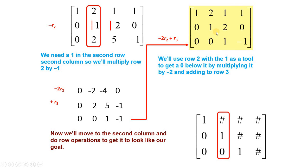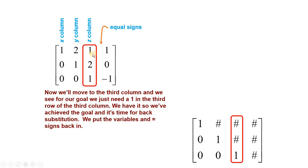اب یہ والی matrix اور یہ والی matrix ایک جیسی ہو گئی ہے — this matrix is just like the goal matrix. یہاں پہ کام کرنا تھا اور اگلا target اس جیسا column بنانا تھا، لیکن یہ already اس جیسا ہے۔ تو ہمارے پاس یہ جو matrix ہے — it is the row echelon form of the augmented matrix. This first column is the coefficient of x, the second column the coefficient of y, and the third the coefficient of z.